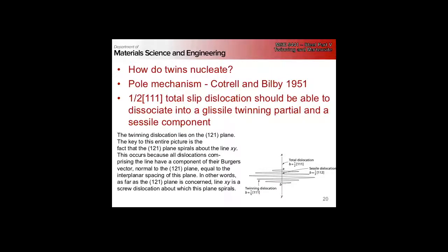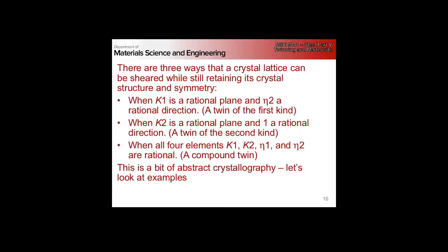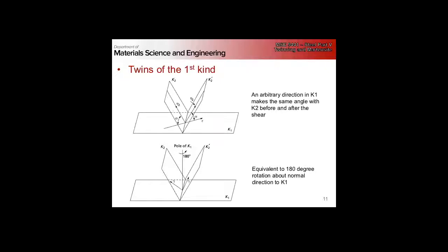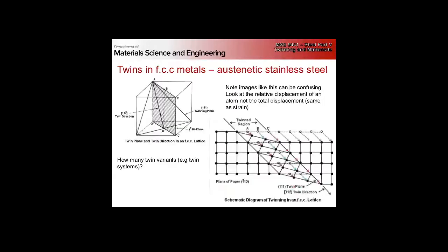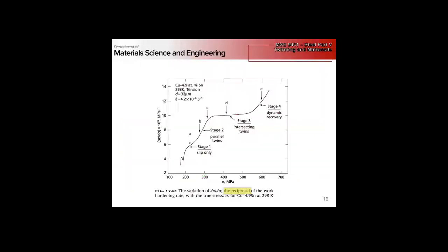On Wednesday we went through the boring geometry of twins, the crystallography, and got a bit into the properties. Remember this is a reciprocal of the work hardening rate, so a large slope means low work hardening and a flat slope means high work hardening. When twins first start to grow, they grow parallel to the slip direction.